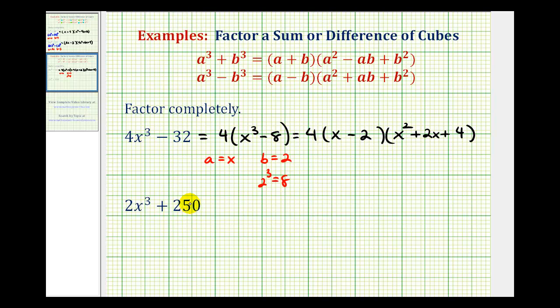So we can't forget the first step in factoring is to factor out the greatest common factor. So here if we factor out the two, we would have two times the quantity x³ plus 125. And now notice that our binomial factor is a sum of cubes.